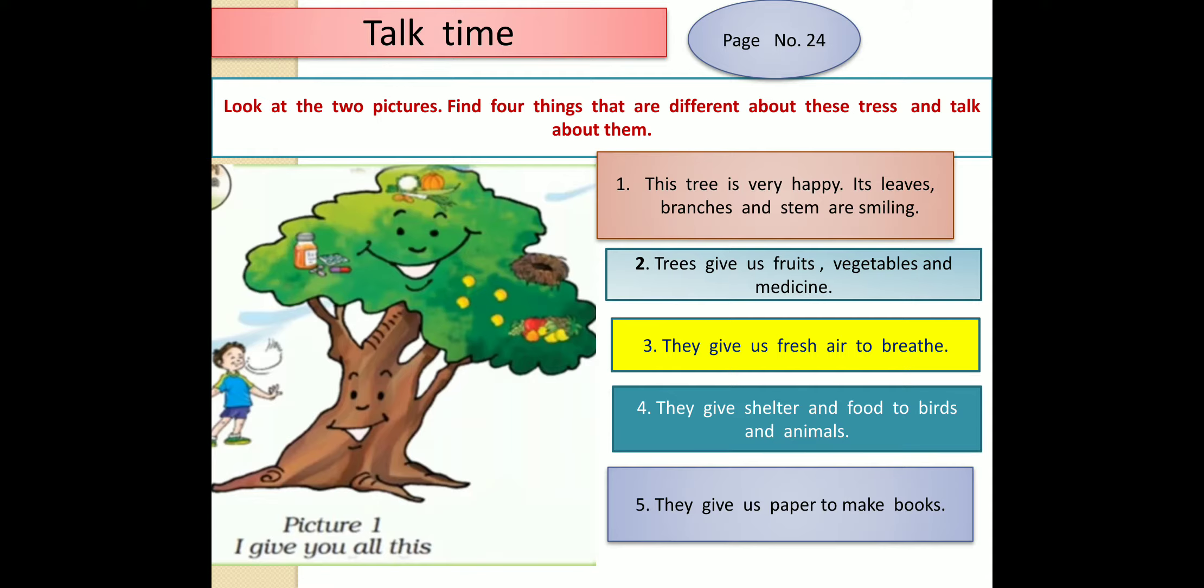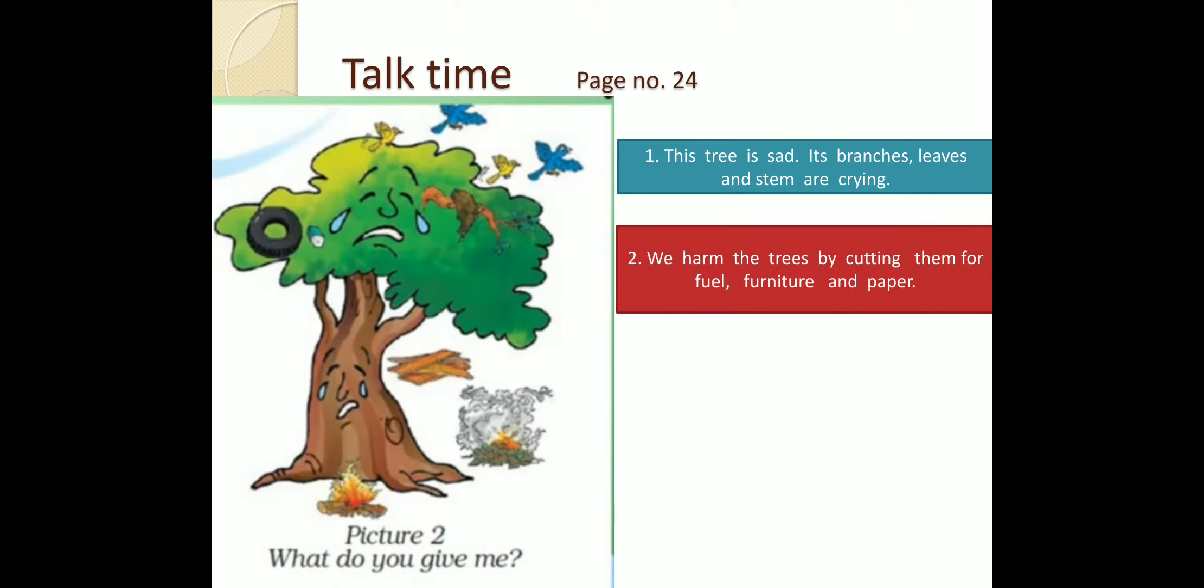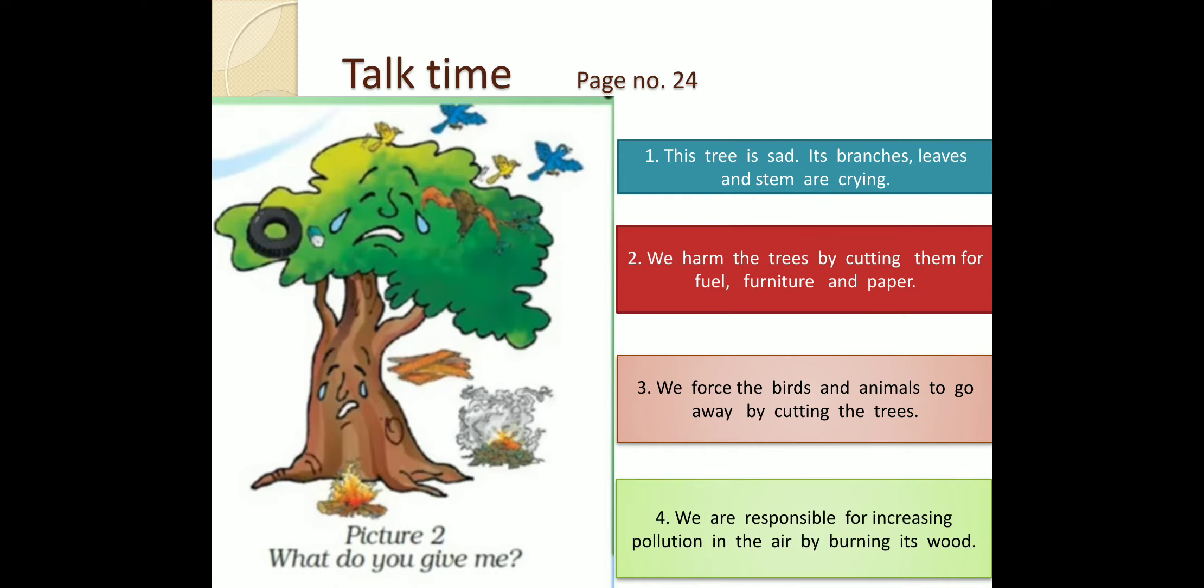Now similarly you see the second tree. What is this tree saying? This tree is sad. Its branches, leaves and stem are crying. We harm the trees by cutting them for fuel, furniture and paper. We force the birds and animals to go away by cutting the trees. We are responsible for increasing pollution in the air by burning its wood.